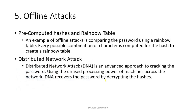Offline attacks include the use of pre-computed hashes and rainbow tables. A rainbow table is created by computing hashes for every possible character combination, then used to compare and crack passwords. In distributed network (DNA) attacks, unused processing power across machines is leveraged to decrypt hashes and crack passwords.